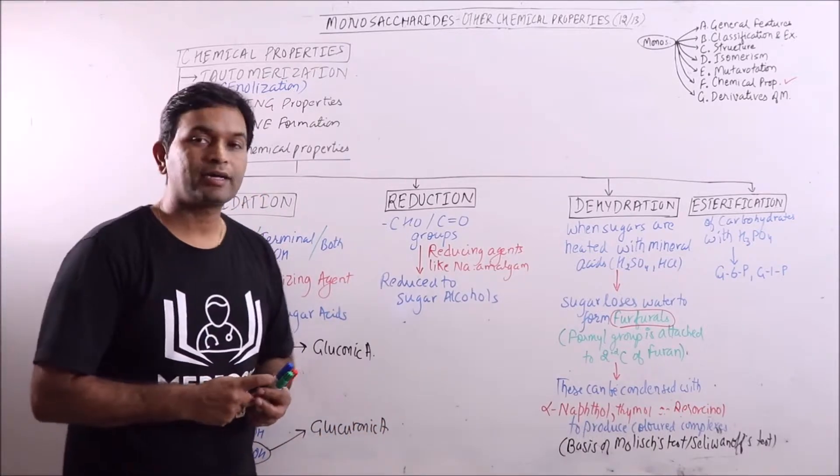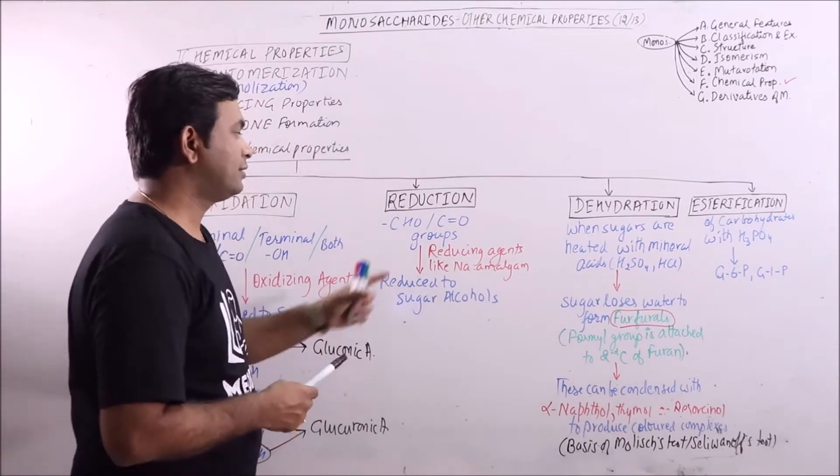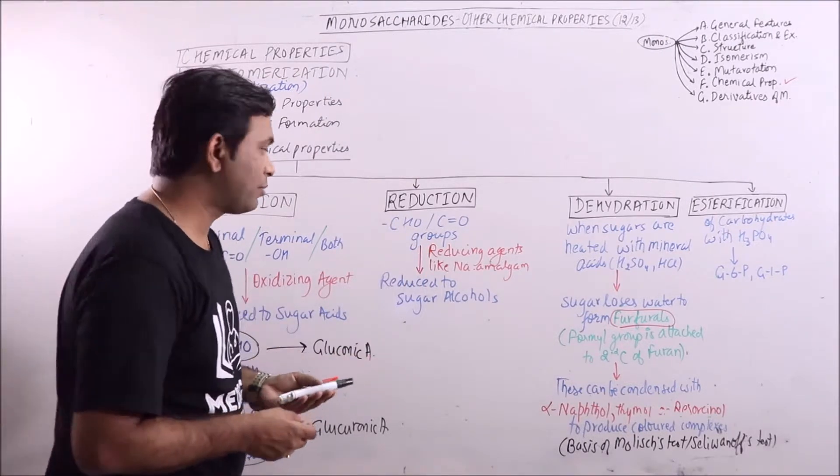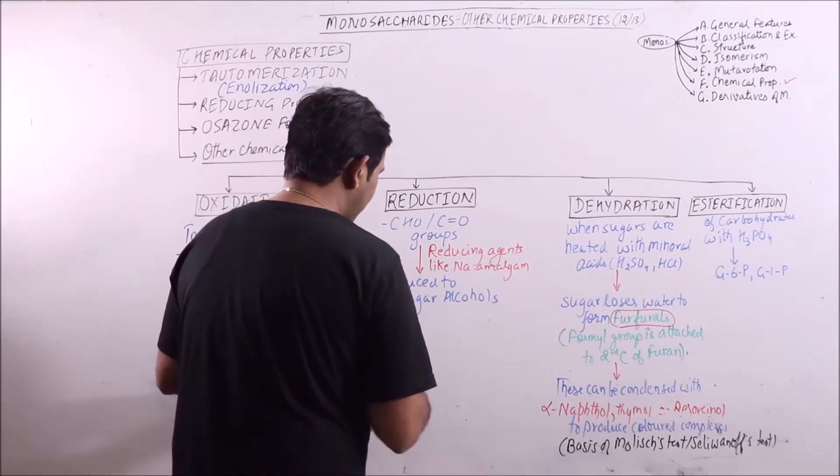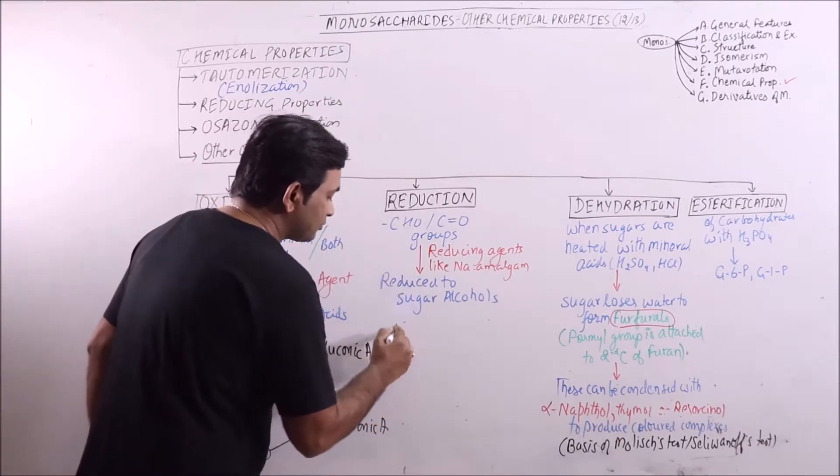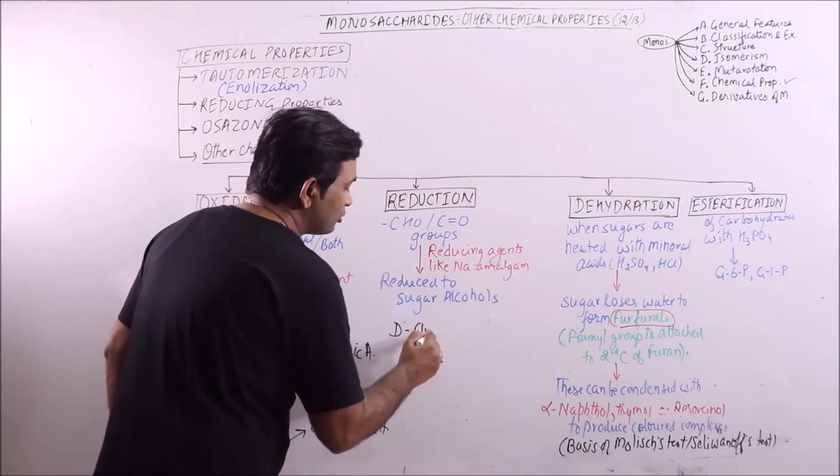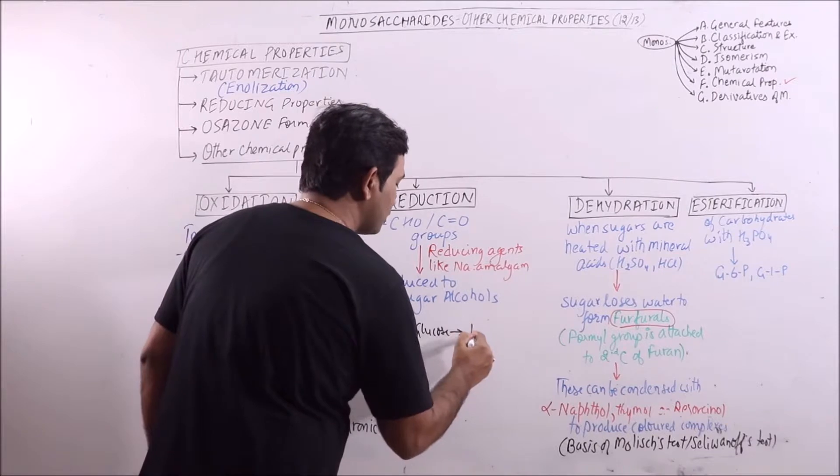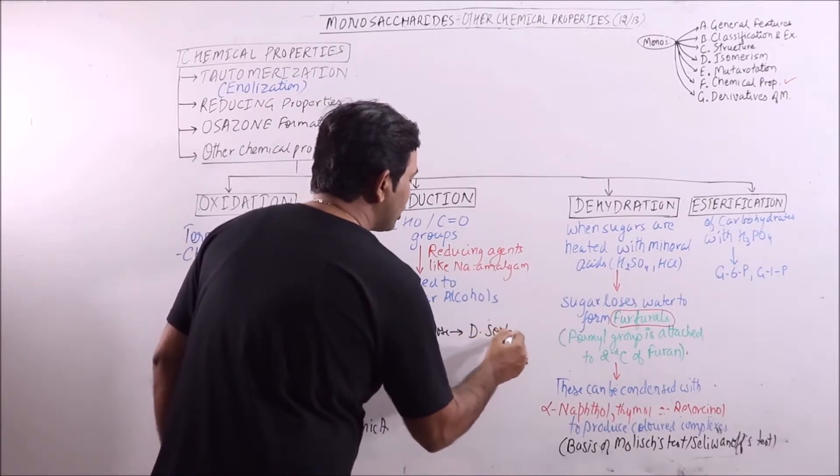Next is reduction. If aldehyde or ketone group is reduced by reducing agents like sodium amalgam, then alcohols, sugar alcohols are formed. For example, if D-glucose is taken then it can be reduced to D-sorbitol.